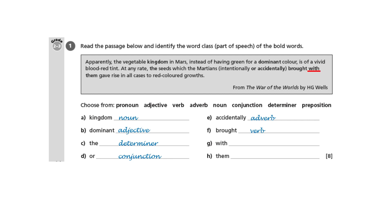Next we have 'with' — it's a small word that makes a connection between 'them', the pronoun 'them', which stands for the Martians and the seeds earlier in the sentence. It positions them in relation to each other, which makes it a preposition. Finally, we have 'them', which as I said is a pronoun that stands in place of 'Martians' — it's instead of a noun, so it's a pronoun.